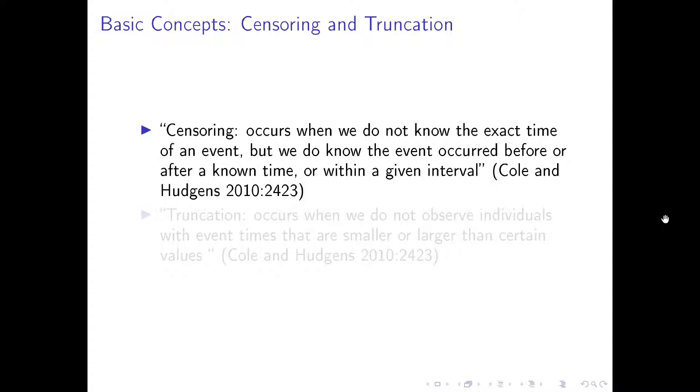So what is censoring? Censoring occurs when we do not know the exact time of an event, but we do know the event occurred before or after a known time or within a given interval. That is, we have these subjects or cases in our study, but somehow we're not able to observe the event of interest or the milestone event occurring during the time interval of our observational study.